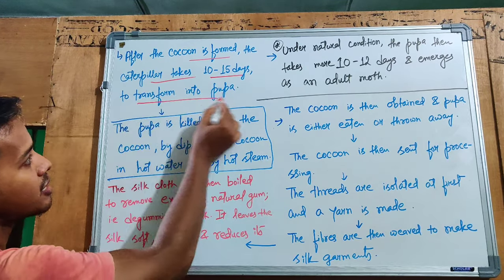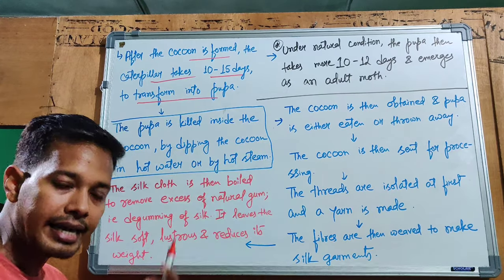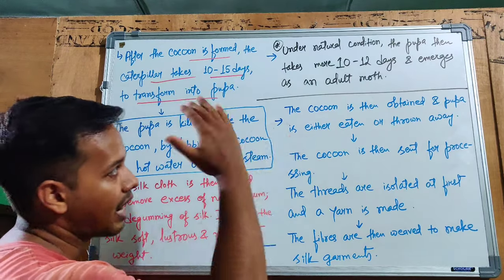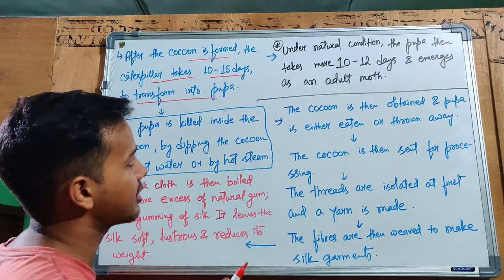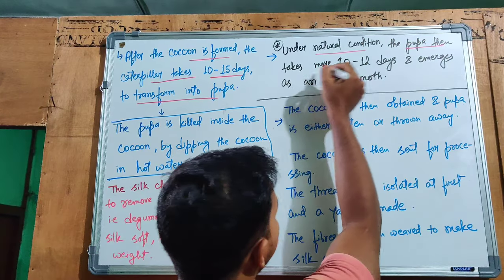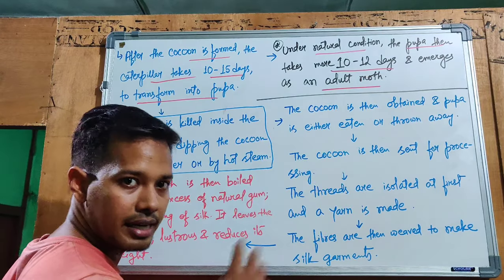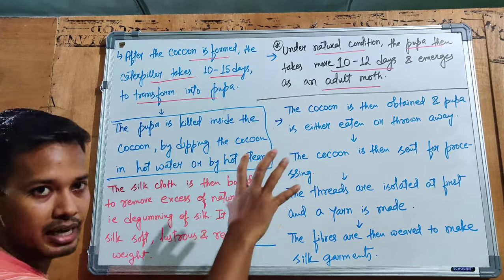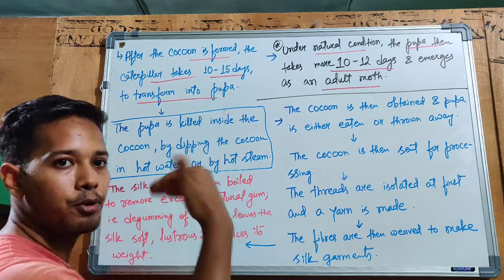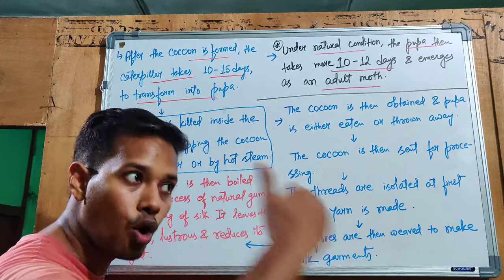It takes 10 to 15 days for the caterpillar to transform into a pupa inside the cocoon. In natural conditions, the pupa takes another 10 to 12 days and emerges as an adult butterfly.